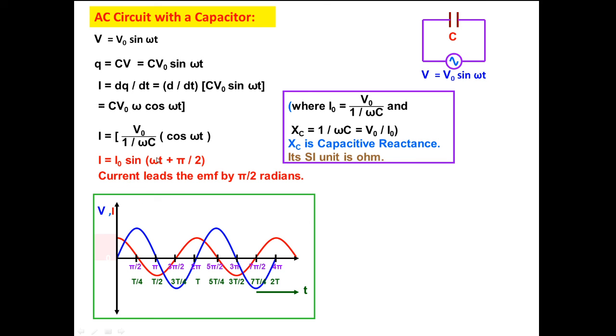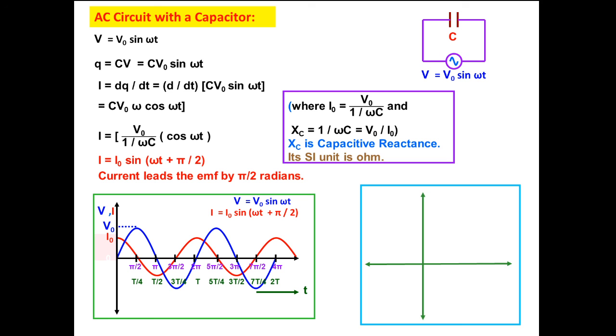We can plot the graph by giving the value of ωt: we can take π/2, π, 3π/2 in both, and then we can plot the graph. So this is a phasor diagram, we can say, just opposite to the inductive circuit. If here, see, the phase of voltage is ωt and current leads the voltage by angle π/2, so the total phase of instantaneous current will be ωt + π/2.